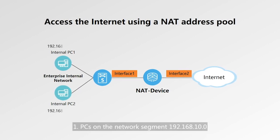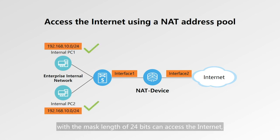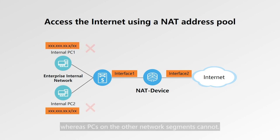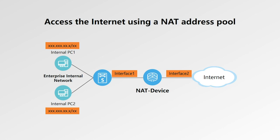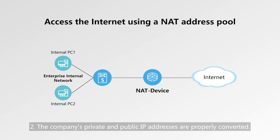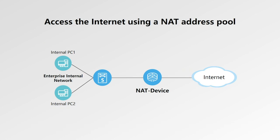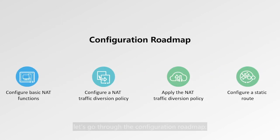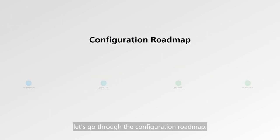The following requirements must be met. Requirement 1: PCs on the network segment 192.168.10.0 with a mask length of 24 bits can access the Internet, whereas PCs on other network segments cannot. Requirement 2: The company's private and public IP addresses are properly converted. Before configuring the device, let's go through the configuration roadmap.